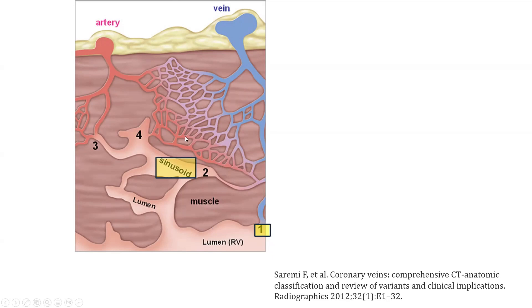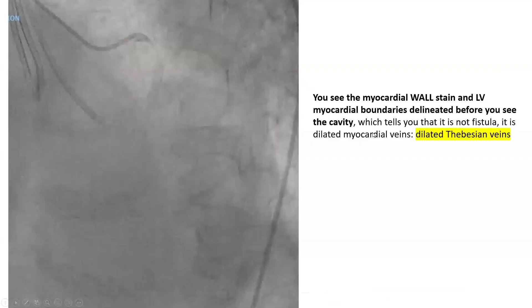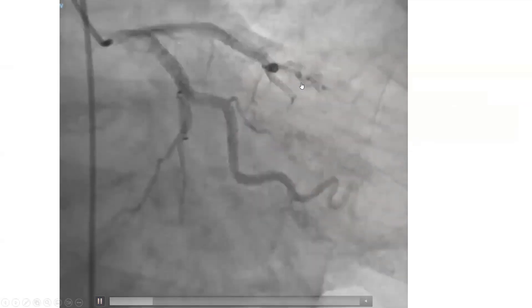They are not hemodynamically significant. The myocardium is not getting ischemic. It's just dilatation of normal anatomical venous structure. It causes a little bit of venous deoxygenated blood to LV shunting. A proof that it's not hemodynamically significant is twofold. If this was a true hemodynamically significant shunt, the myocardium itself will get ischemic, and because of the steal phenomenon from the myocardium, the proximal artery will become dilated and aneurysmal, as happens in coronary cameral fistula. Whereas here, the coronary is not aneurysmal — one indirect suggestion that those are not hemodynamically significant.